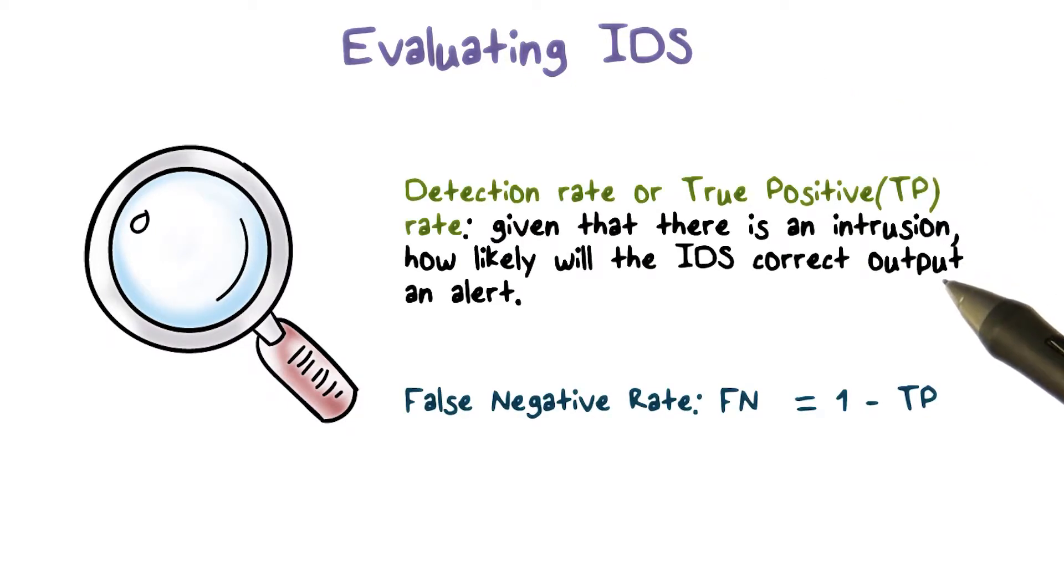We use detection rate, or true positive rate, to measure how well an IDS can detect intrusions. That is, given that there is an intrusion, how likely will the IDS correctly output an alert?